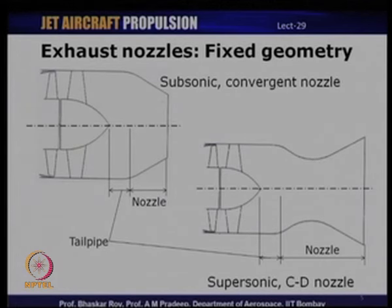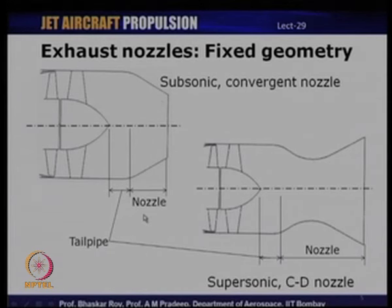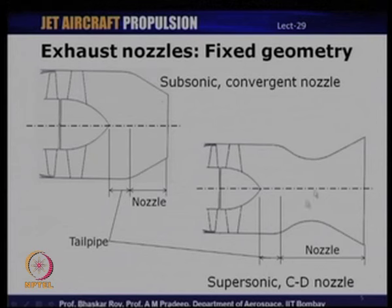If one has to go for supersonic flights, we need to change the geometry and have what is known as a convergent-divergent (CD) nozzle. A CD nozzle has a convergent section, a throat where we have the minimum area, and after the throat a divergent section — used commonly in supersonic aircraft. Both these geometries — the subsonic convergent and the supersonic CD nozzle — as shown here are fixed geometries, meaning these geometries cannot be changed depending upon the operating conditions.